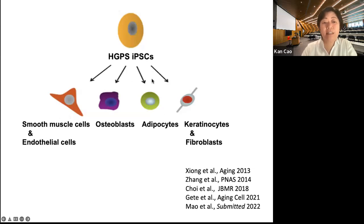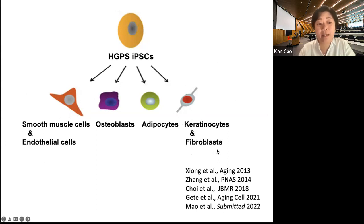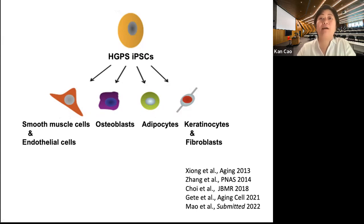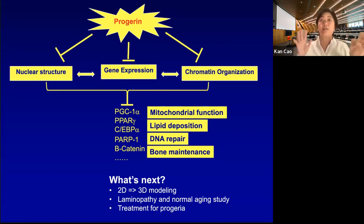In the past 10 years, my lab has used pluripotent stem cells differentiated into a variety of cell lines. Because progeria patients die of cardiovascular disease, we've focused on vascular smooth muscle cells and endothelial cells. We also differentiate iPSCs into keratinocytes, fibroblasts, bone cells, and fat cells. We've published a list of papers, and the key take-home message is that my hypothesis was correct: progerin affects not only structural support but also gene expression and chromatin organization.